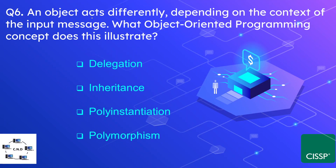Question number 6: An object acts differently depending upon the context of the input message. What object-oriented programming concept does this illustrate? The options are delegation, inheritance, instantiation, or polymorphism. The correct option is polymorphism — poly means many and morph means form, so an object produces different output depending upon the input.